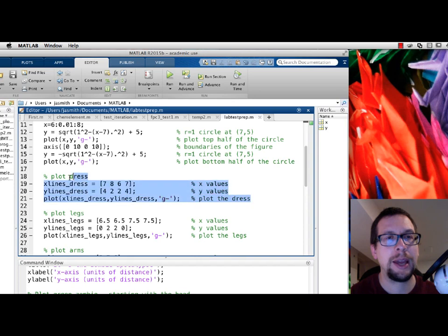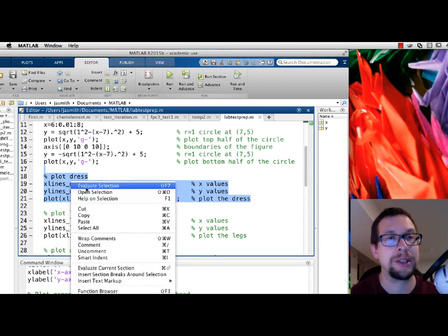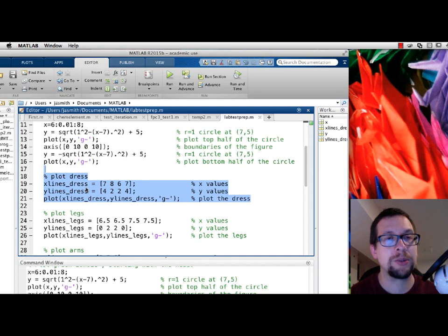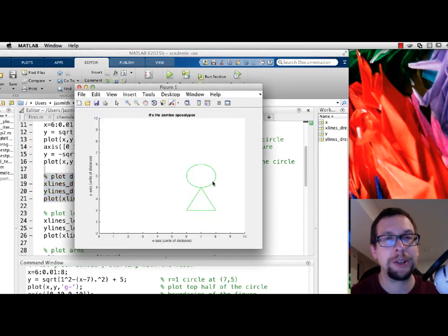I'm going to scroll up a little bit, and what I want to do is plot the dress. Now, from the earlier illustration, you can review it again, and you'll see that we define the dress as having four different points. These are the x-axis values, and these are the y-axis values. So 7 and 4, 8 and 2, 6 and 2, 7 and 4. We plot it, and we'll have a triangle that comes out of this. So, highlight, right-click, evaluate selection. I'm going to switch over to my figure, and here you have it, a circle and a triangle. I go back to my editor.